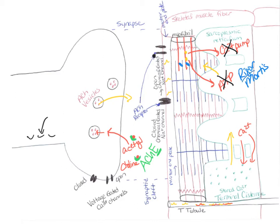During rigor mortis, because of those cross bridges and the sarcomere being sustained in that shortened state, the muscles are going to appear very stiff. But after several hours, the Z-lines break down, the myofibrils start to break down, and then the muscles start to relax again — but that can take up to two to seven hours after death.